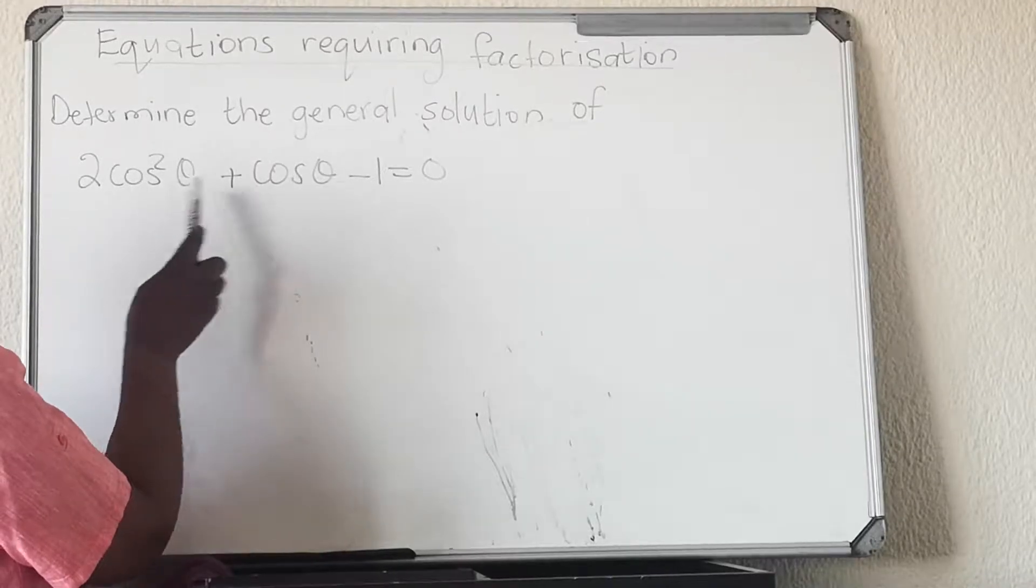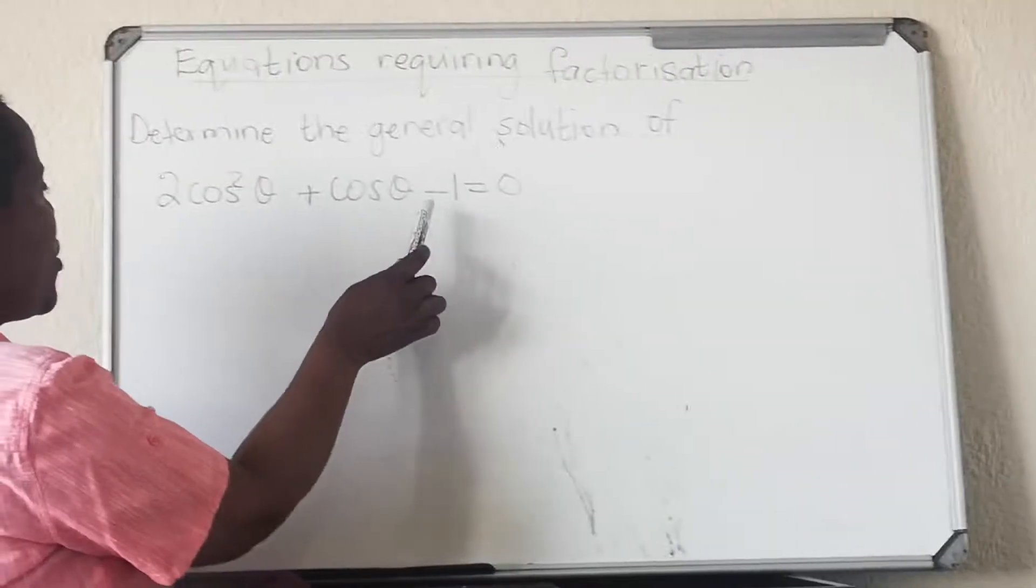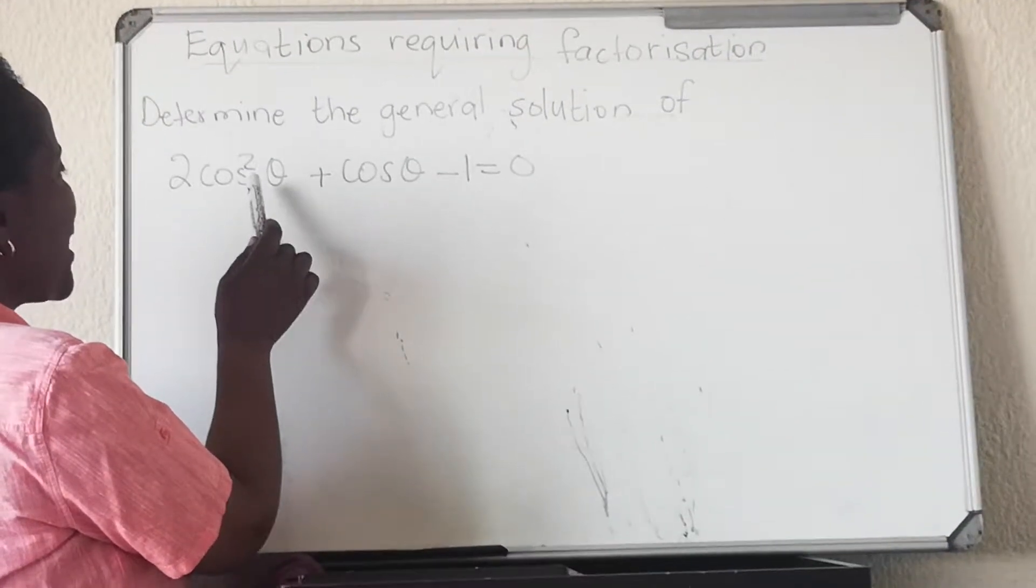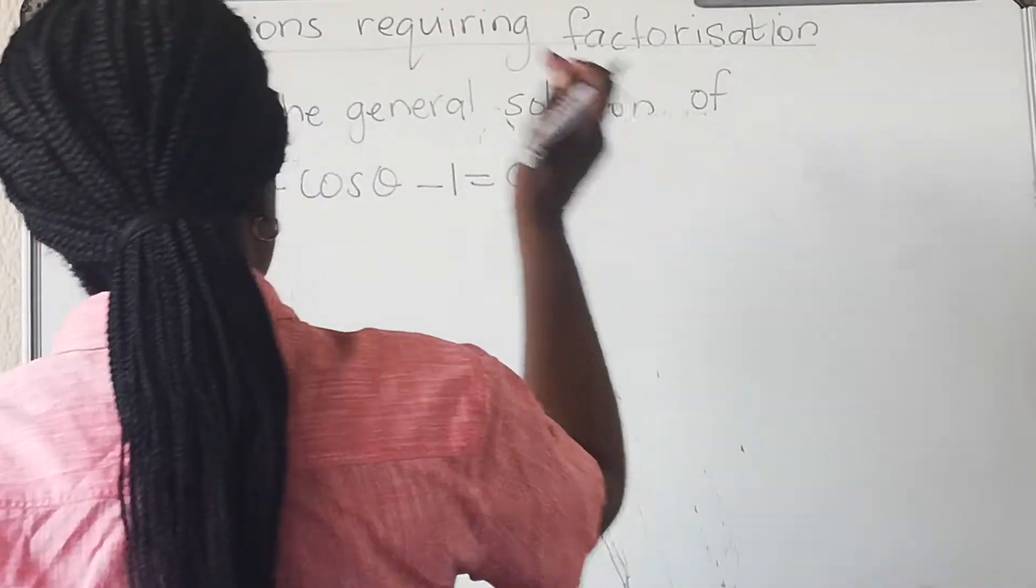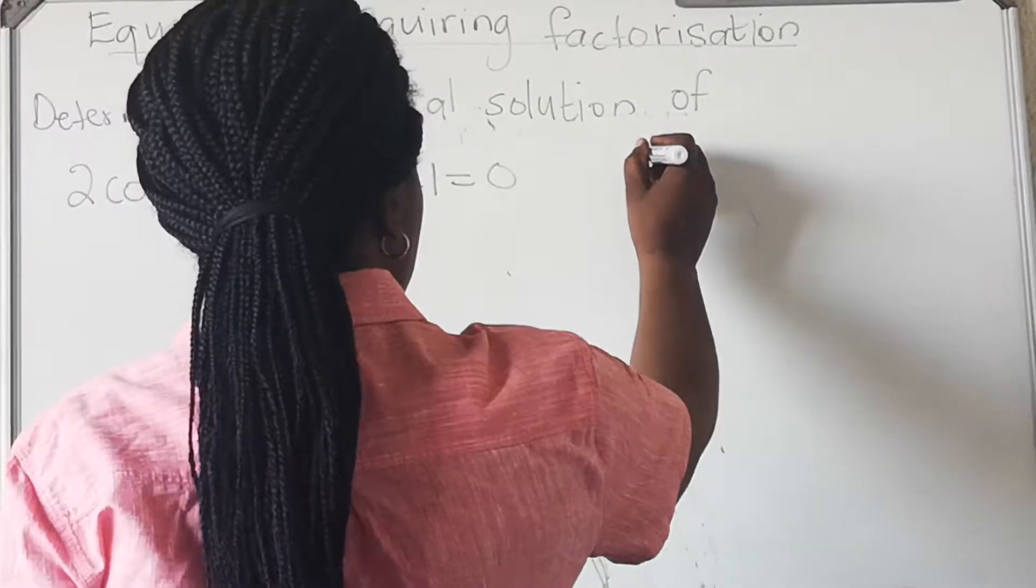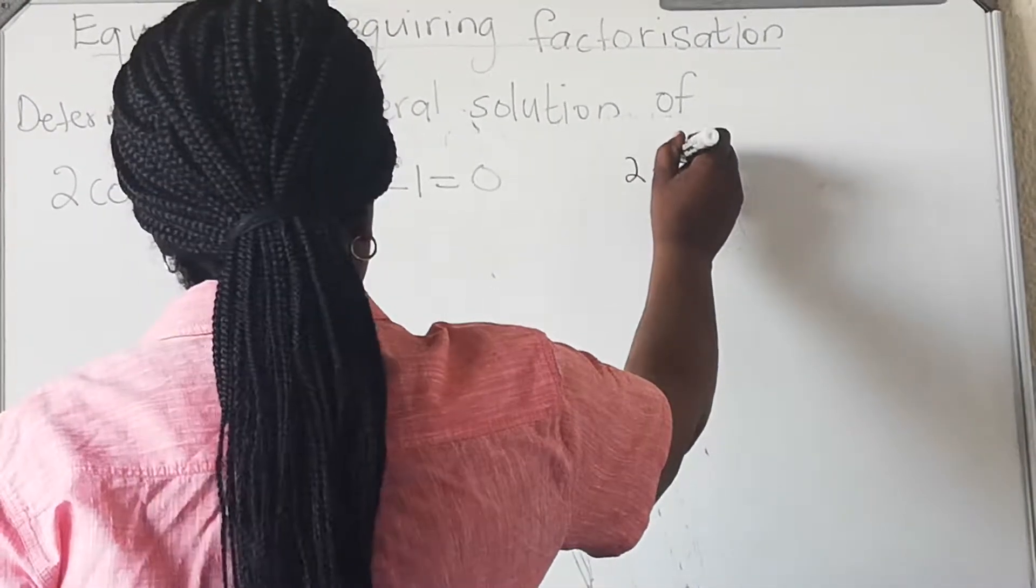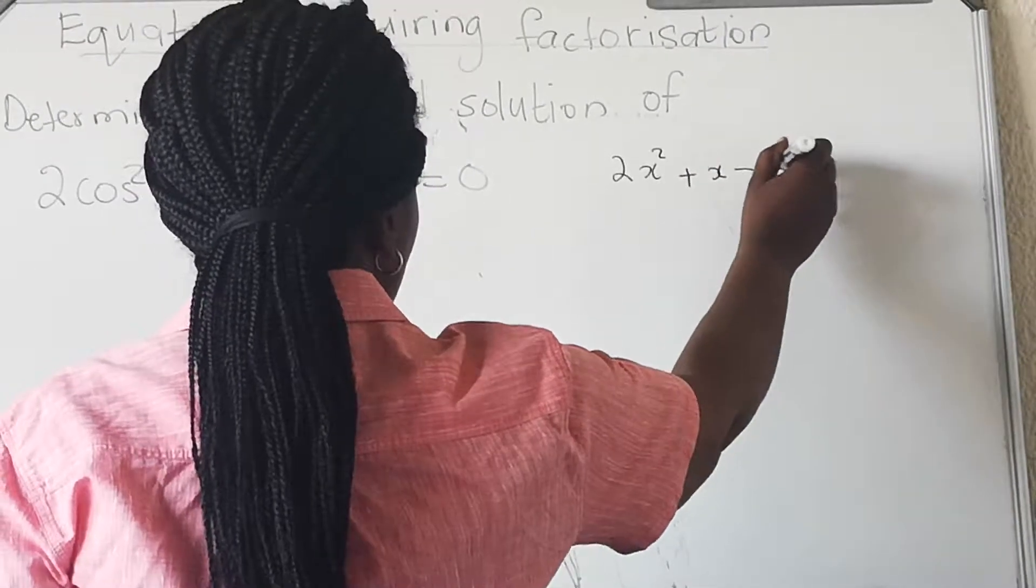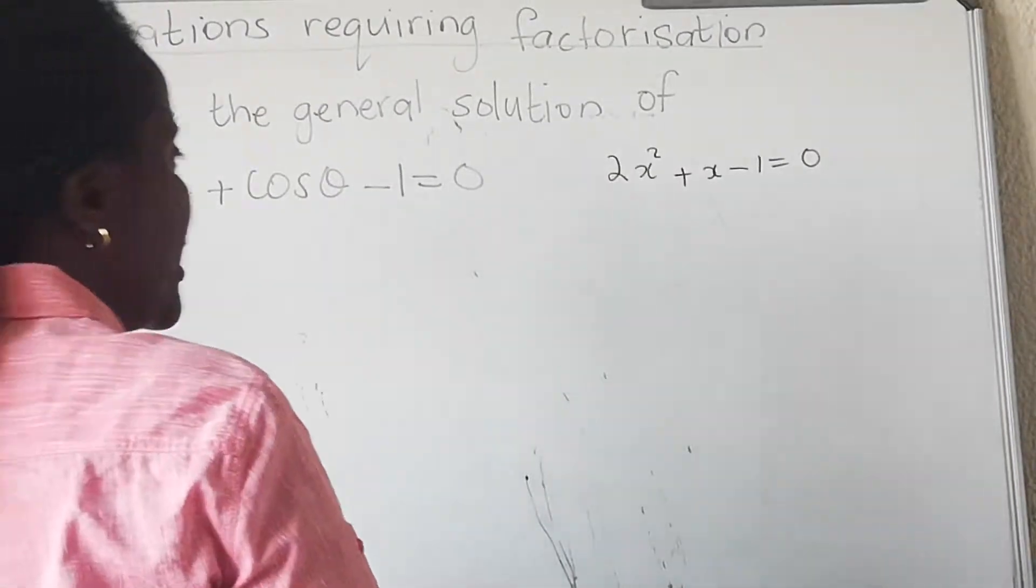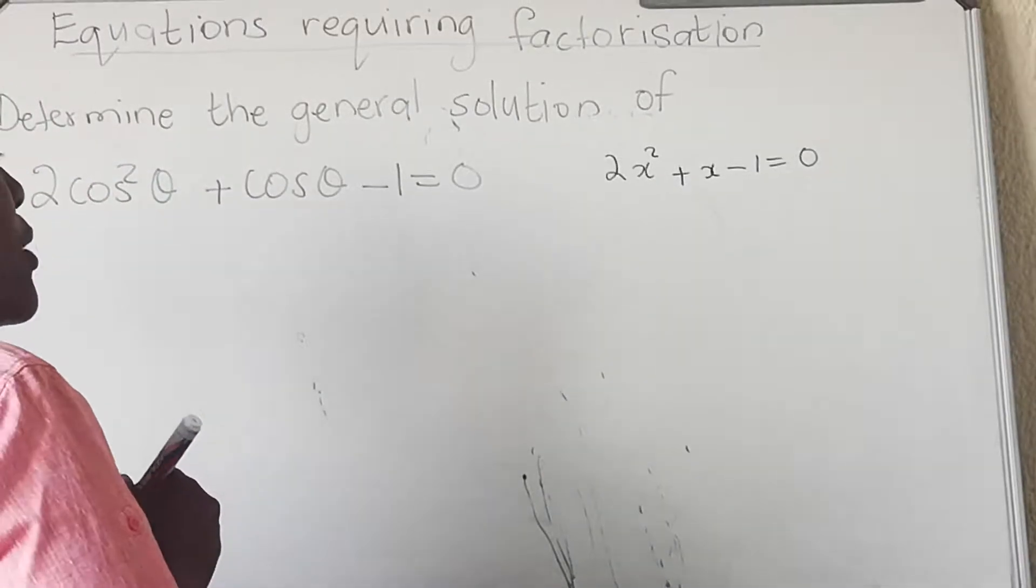So when you see that you have a trinomial, but this trinomial's variable is cos. To make it easier for you, you go to the side and substitute cos with x. So you have 2x² + x - 1 = 0. Now this equation looks familiar, then factorize it.